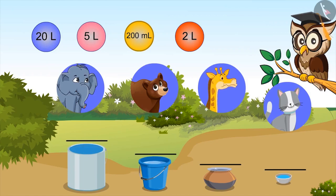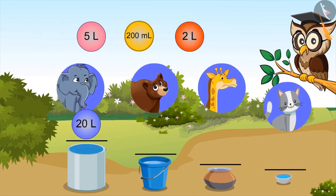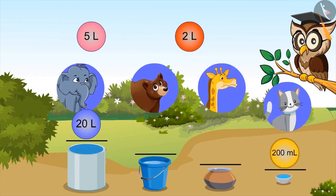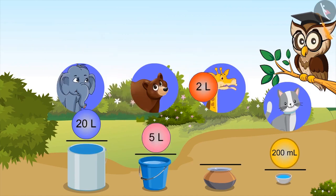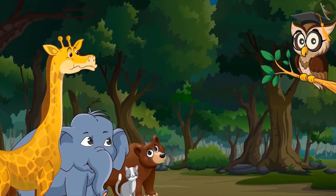So according to you, what will be the right answer? According to me, a drum has a capacity of twenty litres. Very good. So the capacity of the bowl will be two hundred ml. Right. Now you all have got it. Capacity of the bucket is five litres and capacity of the utensil is two litres. Very good, kids. Sir, please show some more examples.